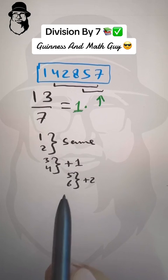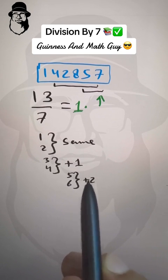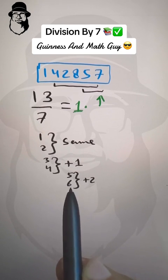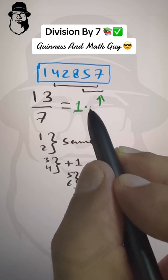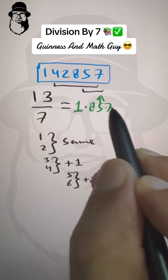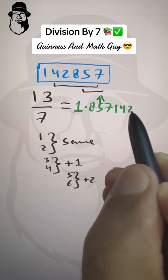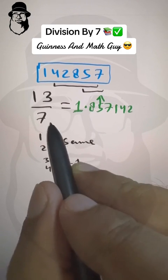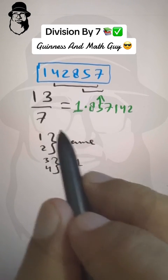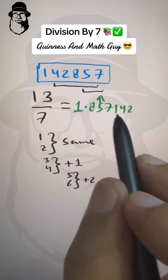When we are getting remainder 6, we start with 2 more. So 2 more than 6 is 8. We start back from 8, 5, 7, 1, 4, 2, 8, 5, 7. And so the answer to this question is 13 over 7 is 1.857142, and this will repeat forever.